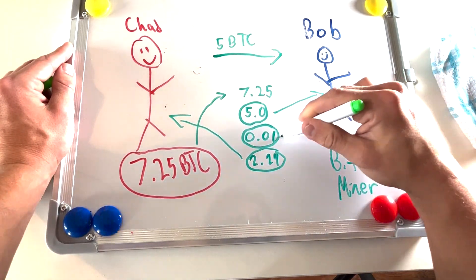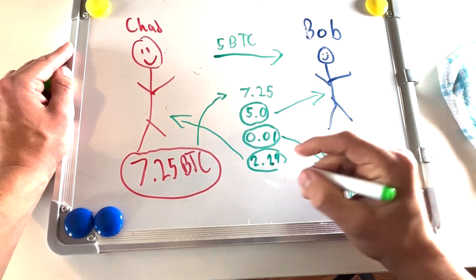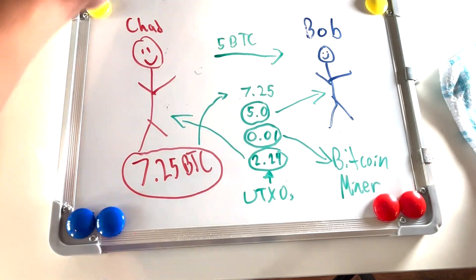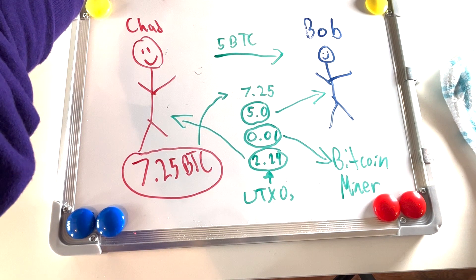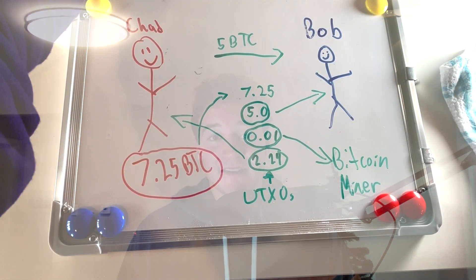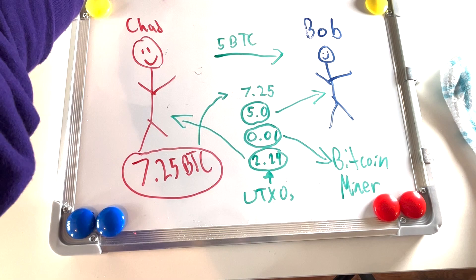Bob will receive a UTXO of 5 BTC. The miner that processed this transaction earns a fee for doing so. To keep the math simple, let's say the fee for this transaction was 0.01 BTC, so an output of 0.01 BTC is created to send to the miner. The transaction fees earned by miners is variable — keep that in mind because we're going to circle back, as this is the key idea of the video. Lastly, Chad will receive a UTXO of the remaining 2.24 BTC.